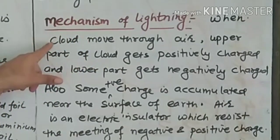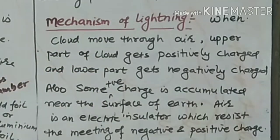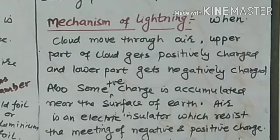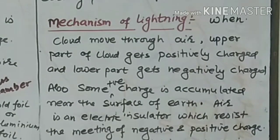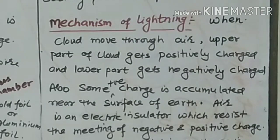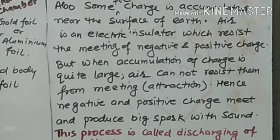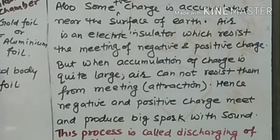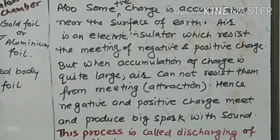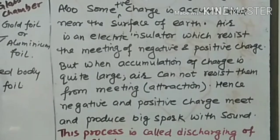When clouds move through air, the upper part of the clouds gets positively charged and the lower part gets negatively charged. Also, some positive charge is accumulated near the surface of the earth. Air is an electric insulator which resists the meeting of the negative and positive charges of the cloud and the earth. But when the accumulation of charge is quite large,